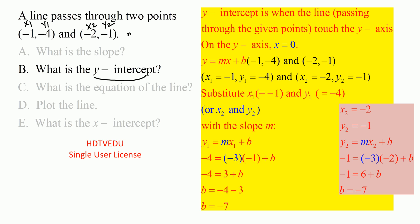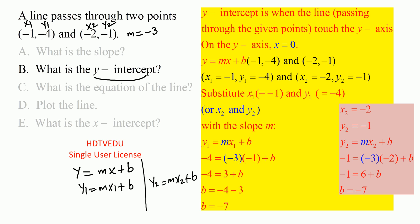Part b: what is the y-intercept? We know x1 y1, x2 y2, and the slope is negative 3. We know y equals mx plus b. If x1 y1 is a point on the line, then y1 equals mx1 plus b. Similarly, y2 equals mx2 plus b. We know x1 y1, x2 y2, and slope — the only unknown is b.